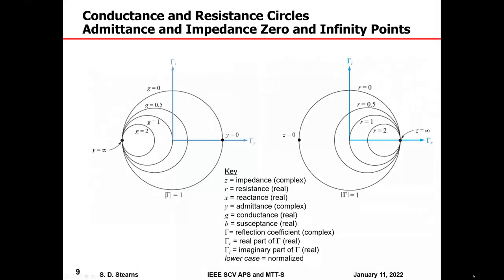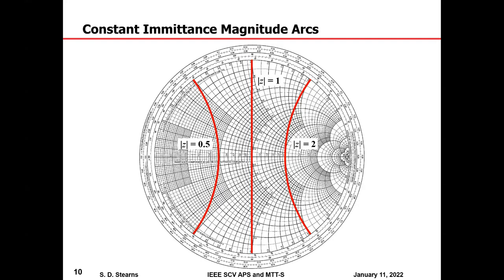The constant conductance circles are shown on the left, the constant resistance circles on the right. In many charts both sets are overlaid simultaneously. Many EDA programs let you turn the grids on and off at will, so you can look at admittance coordinates, impedance coordinates, or both at the same time.